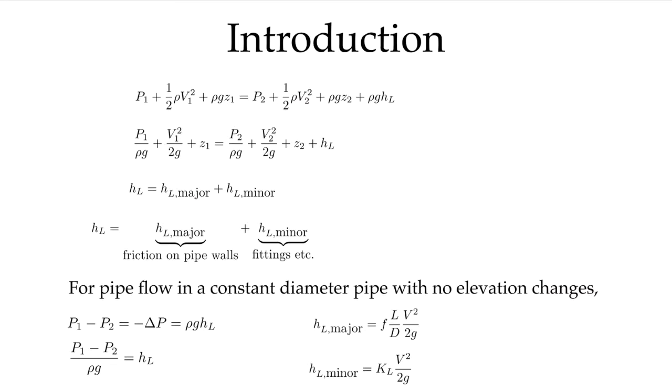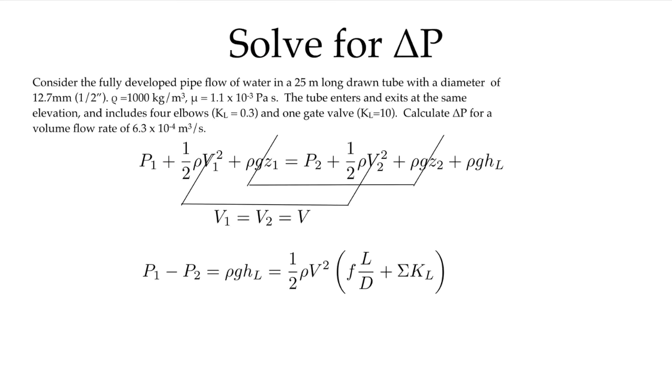So here's the problem I'm going to look at. First we're going to do the type one problem, or the straightforward direct solve of the problem: solve for the ΔP given a flow rate. So we have a fully developed pipe flow of water in a 25 meter long drawn tube.